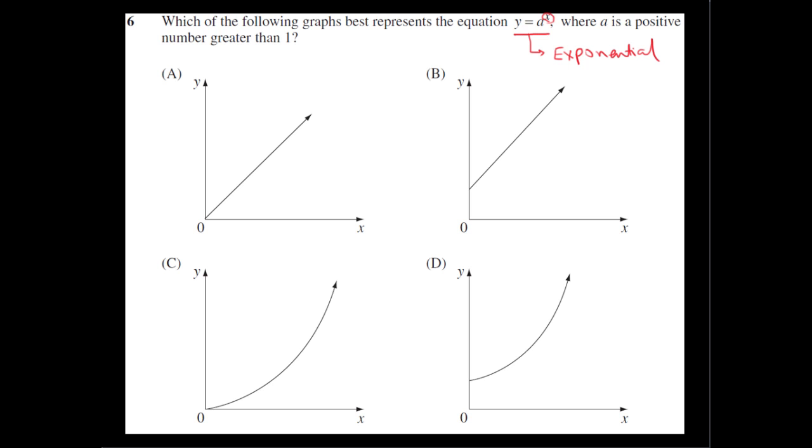Exponential equations are not straight lines, they are in fact curves, like this. They could also be like that, or like that, or like that, but they're curves, they're not straight lines, so that rules out a and it rules out b.